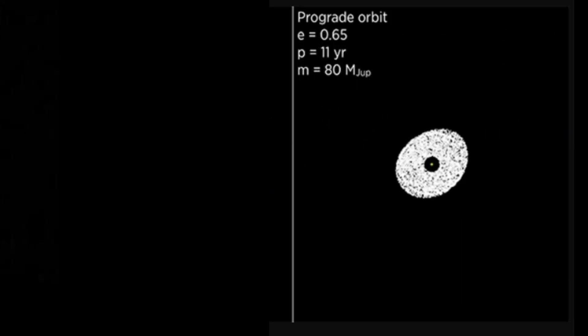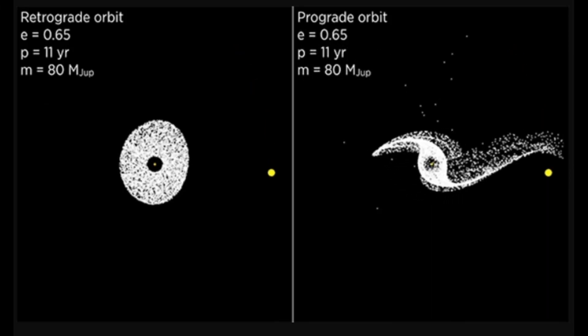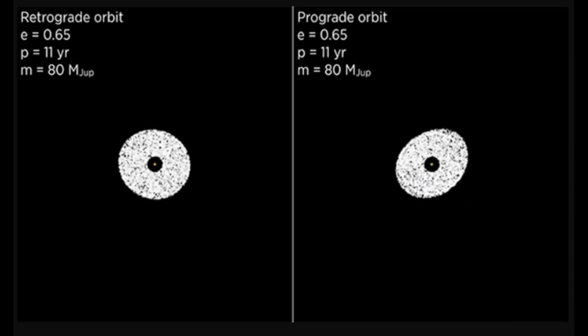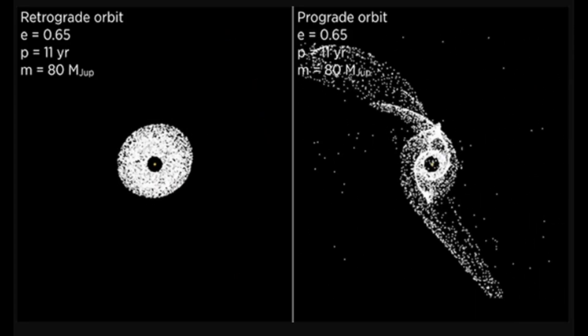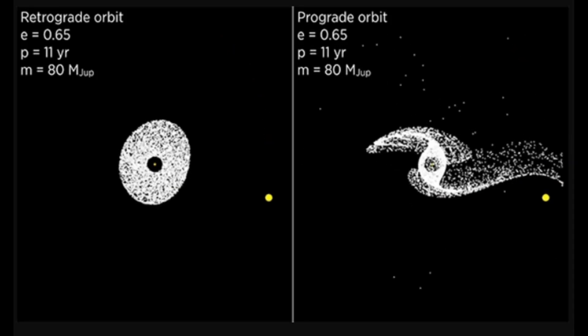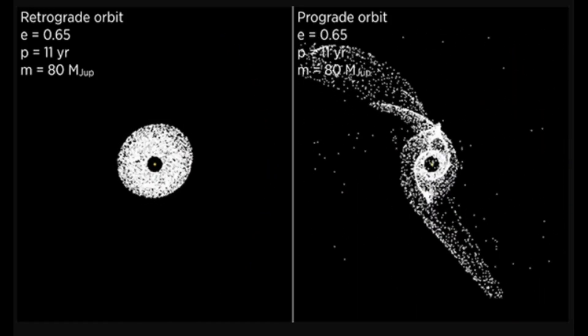As you can see in the case of the retrograde rotation, the rings were intact. This is because having a retrograde rotation means that the particles of the ring system are never too close to the star for too long and thus can stay together.